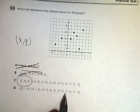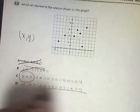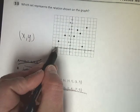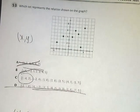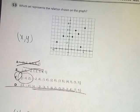What they're just trying to do is catch you into flipping them. But remember that x comes before y, and you just go over on the x axis and go up. So the answer to number 53 is just C.